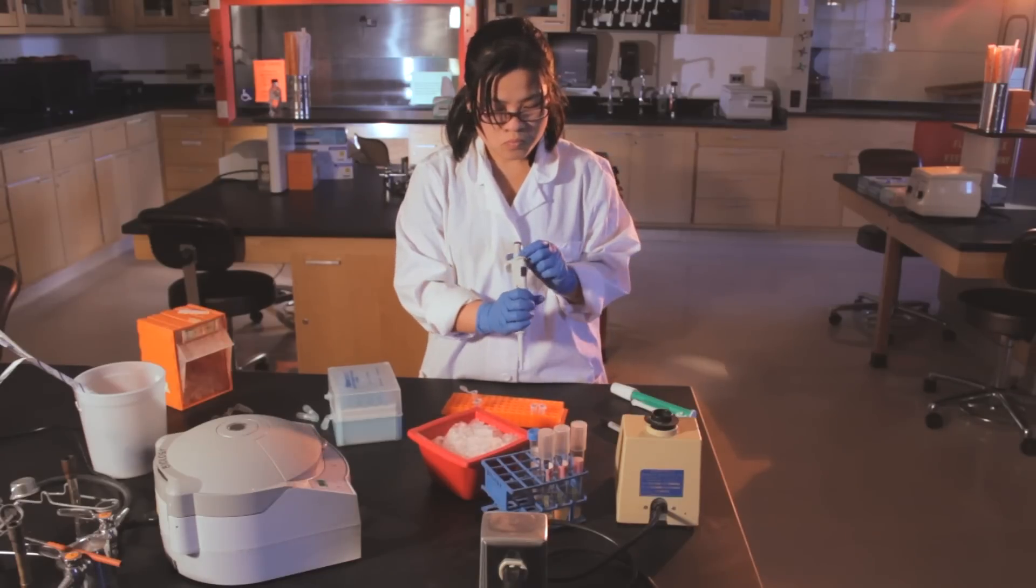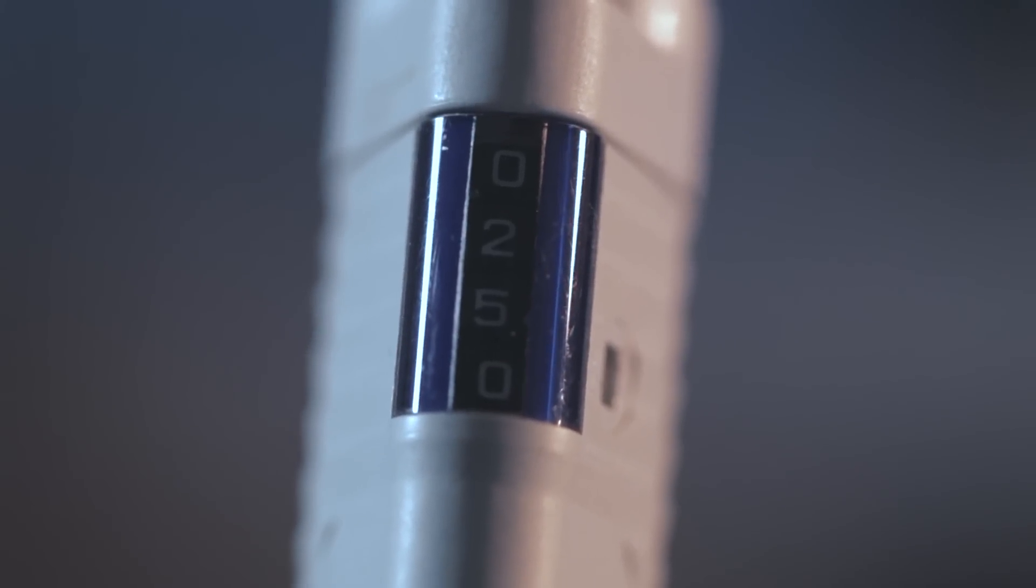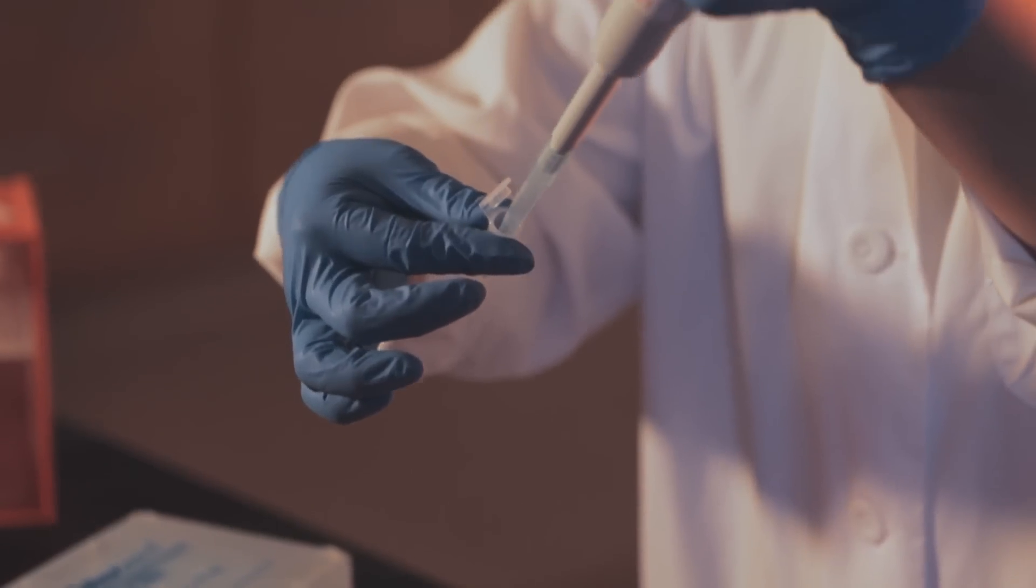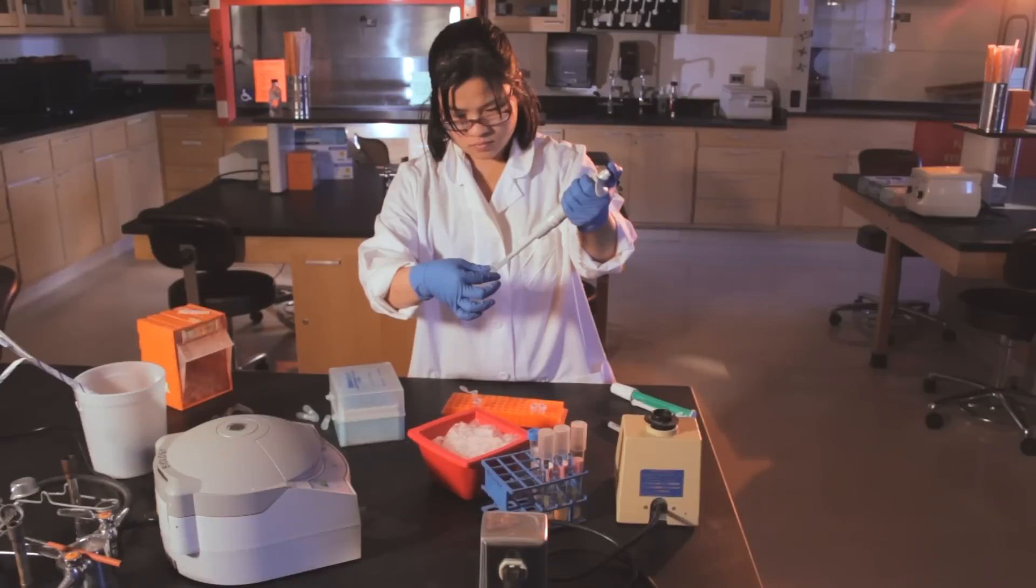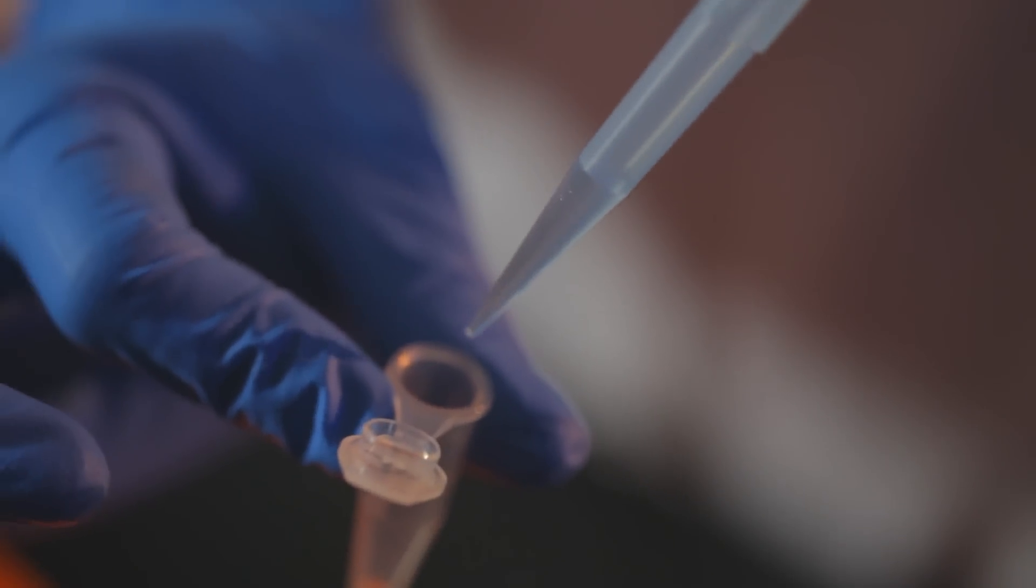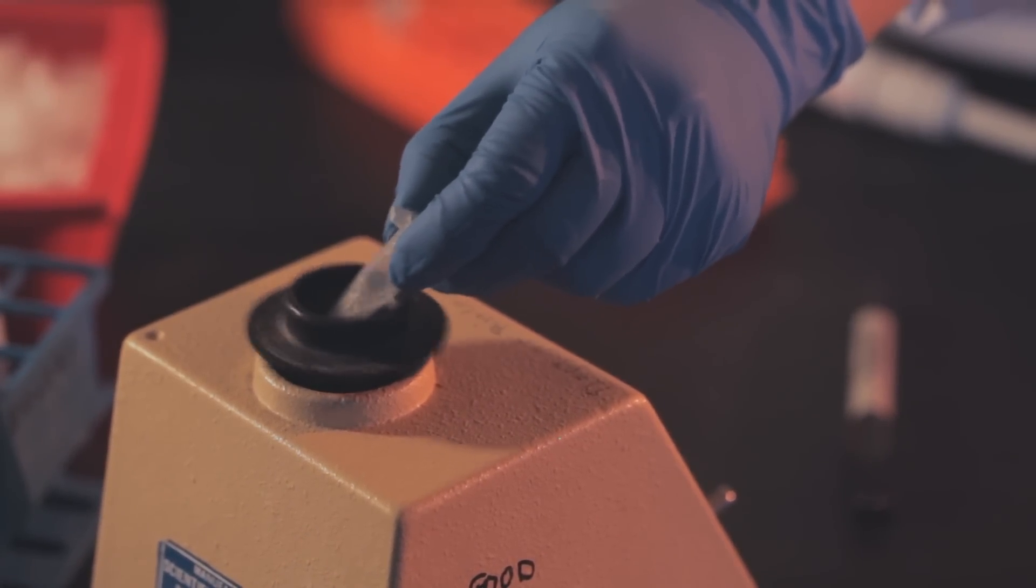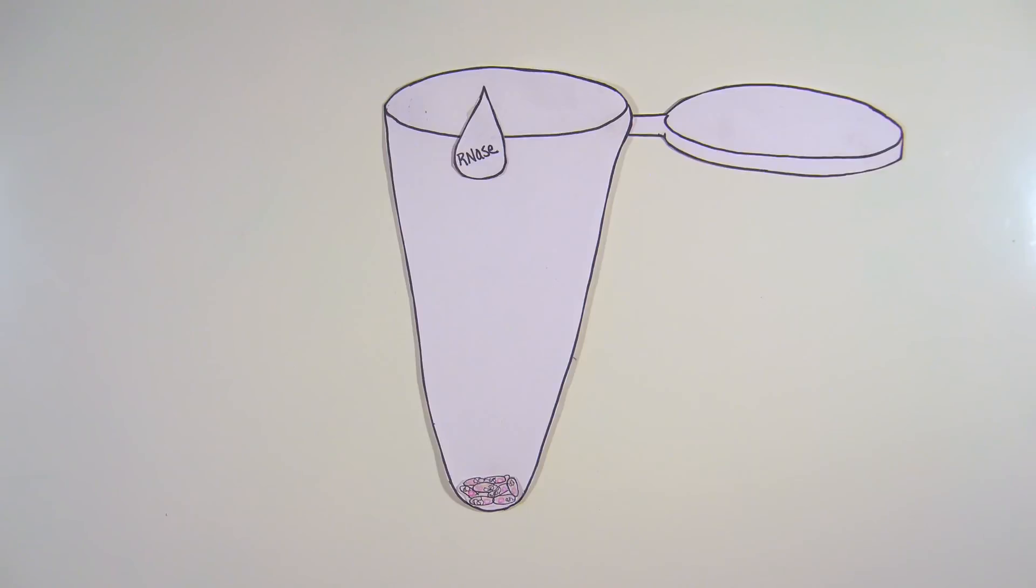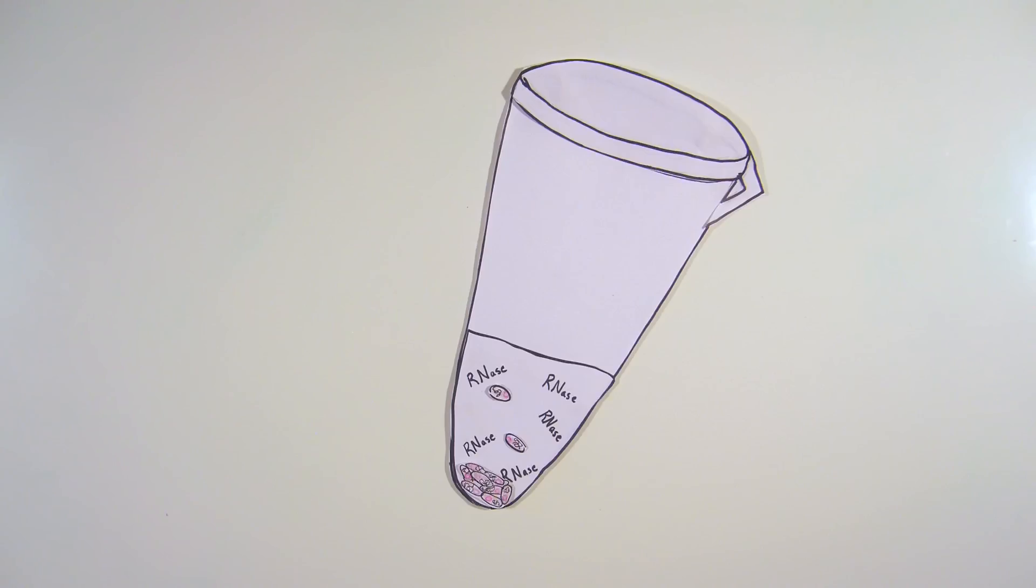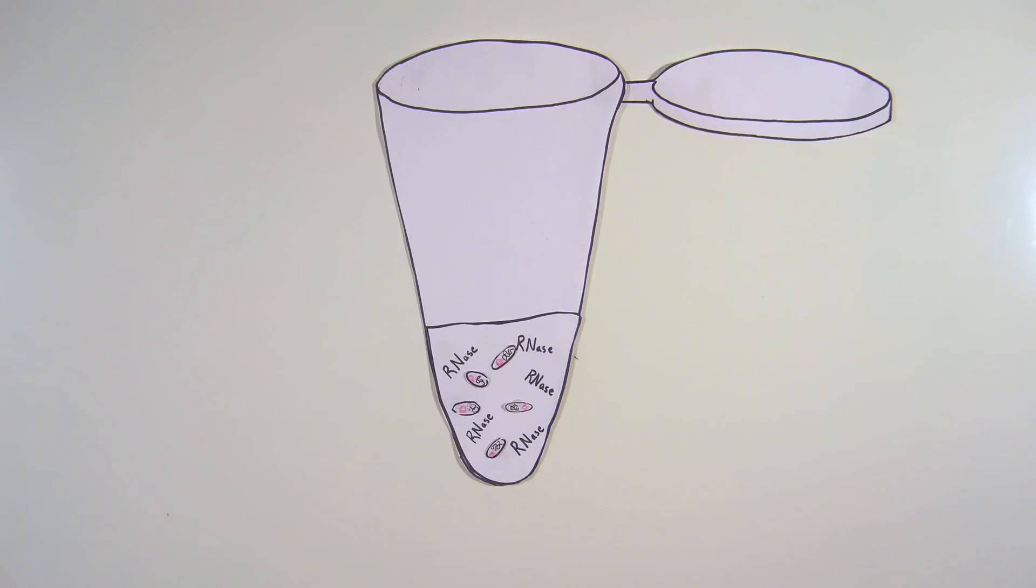Resuspend the pelleted bacterial cells in 250 microliters of the resuspension buffer. Be sure to use proper pipetting technique when you do this. After you have added the 250 microliters of resuspension buffer, mix until no cell clumps are visible in the suspension. The resuspension buffer used in this step contains RNase, which will degrade RNA from the mini prep in the next step when the cells are lysed.